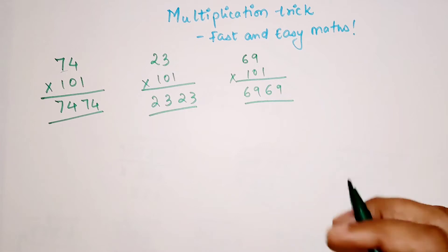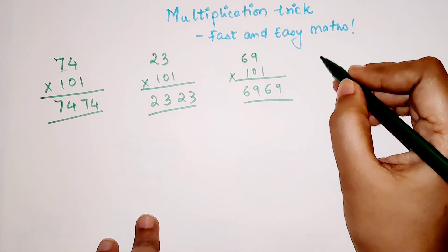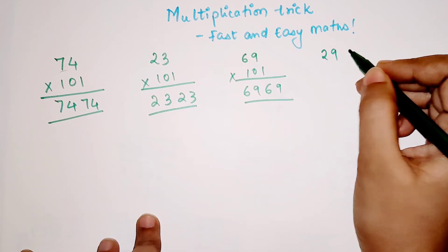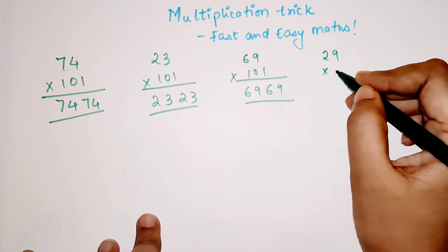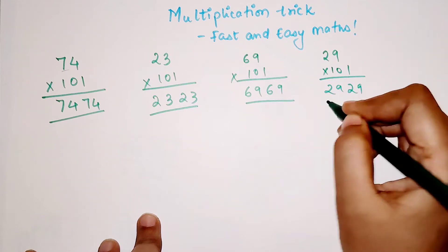Now let's very quickly try one more. 29 into 101. So answer is 2929.